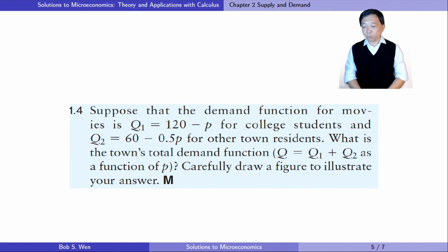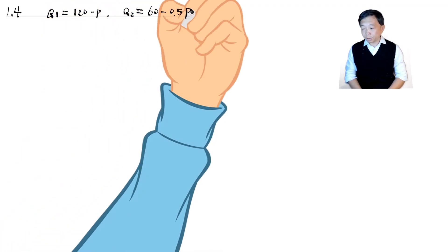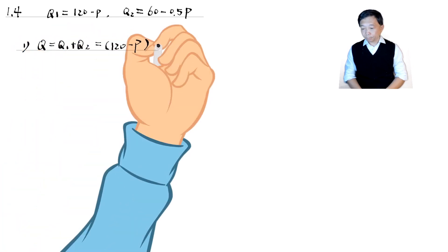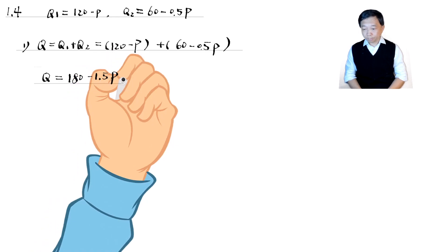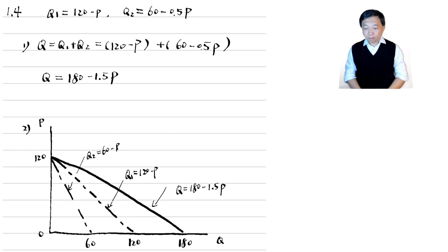Let's find the answer to exercise 1.4. Suppose that the demand function for movies is q1 equals 120 minus p for college students and q2 equals 60 minus 0.5 p for other time residents. What is the time's total demand function? Carefully draw a figure to illustrate your answer. The total quantity demanded at a given price is the sum of the quantity each consumer demands at that price. That is, we add the demand curve horizontally. So the time's total demand function is q equals 180 minus 1.5 times p. The total demand curve is a downward sloping straight line. It is the horizontal sum of the two demand curves.